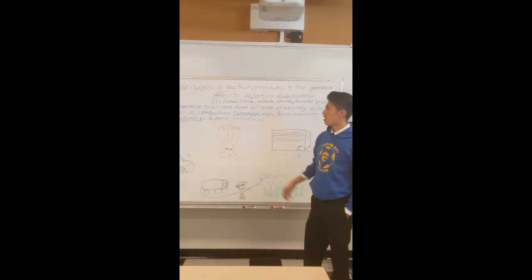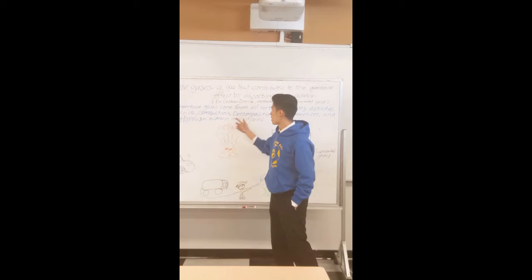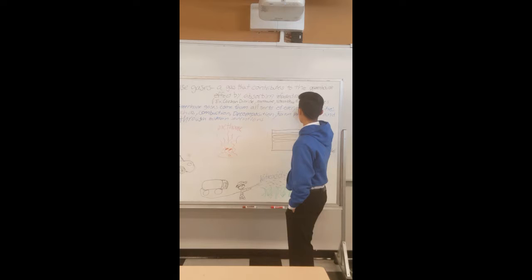Alright, so my name is Juan Perez and I'm going to be talking about how greenhouse gases are formed and what are they. Greenhouse gases are gases that contribute to the greenhouse effect by absorbing infrared radiation. Some examples are carbon dioxide, methane, nitrous oxide, and fluorinated gases.